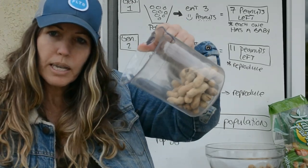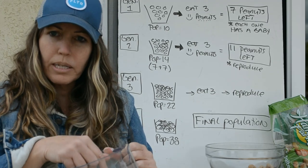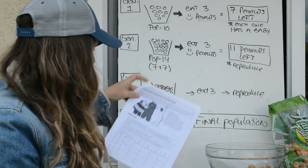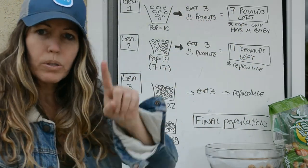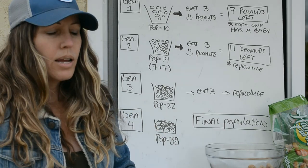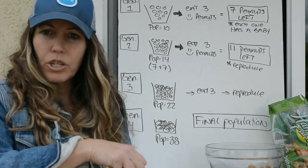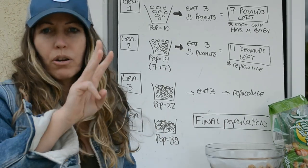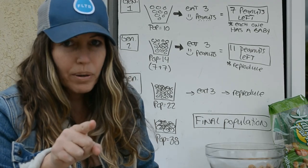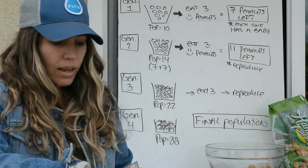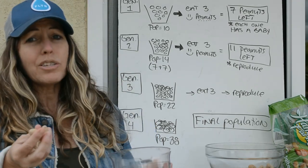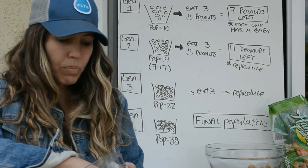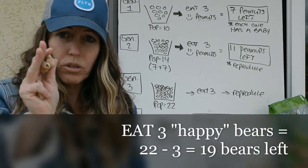With a population of 22, dump them out, analyze all your happy and sad on your data table. You'll be analyzing both numbers and percentages — the percentage is what's important. As a predator, grab three happy bears; if you have no happy bears, grab three sad bears. Either way, grab three bears and remove them.